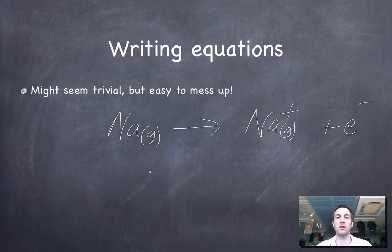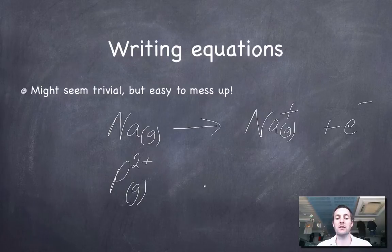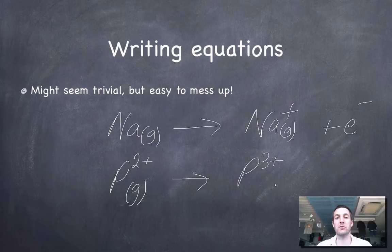If you're asked to write a third ionization energy for phosphorus, then you need to realize that you're starting with a two-plus ion because you've already removed two electrons. It's a gaseous ion and you're turning it into a three-plus ion because you're removing the third electron. So the equations are quite simple. We're taking something and we're removing an electron from it to turn it into something more positive. But do remember the state symbols because they show that you know the definitions.